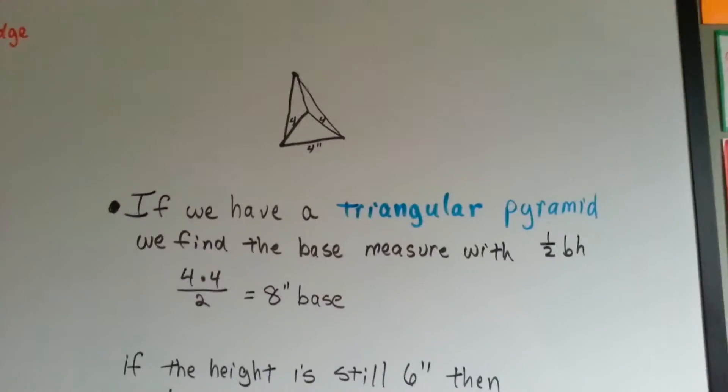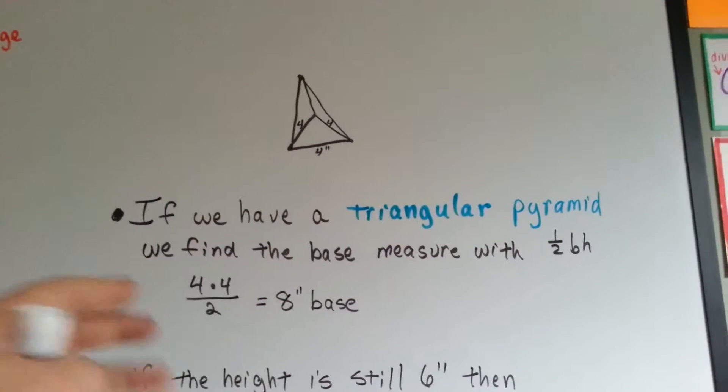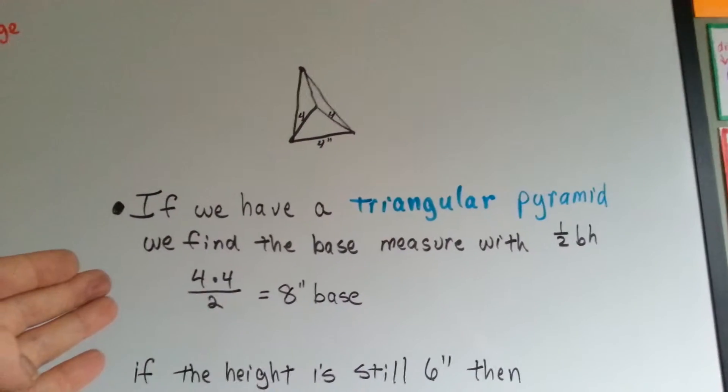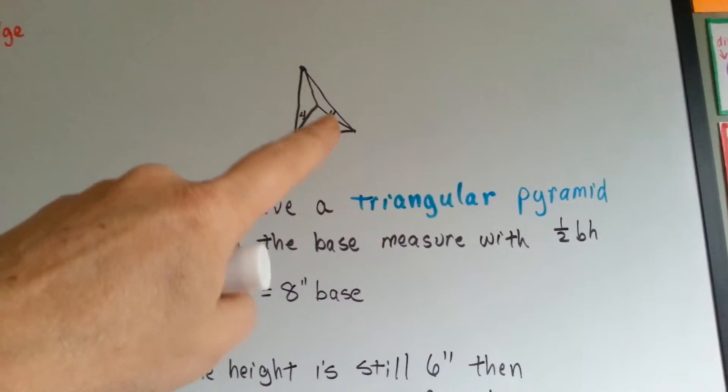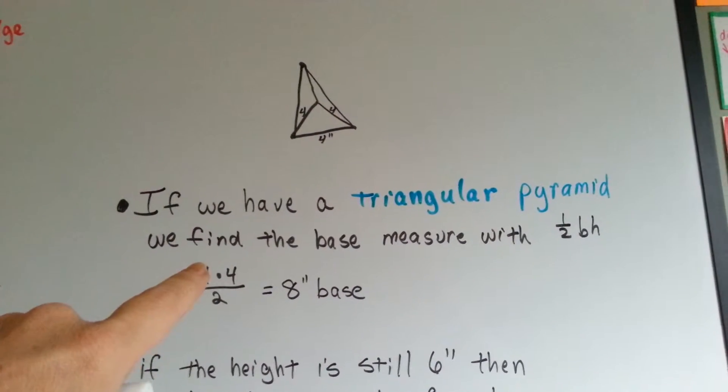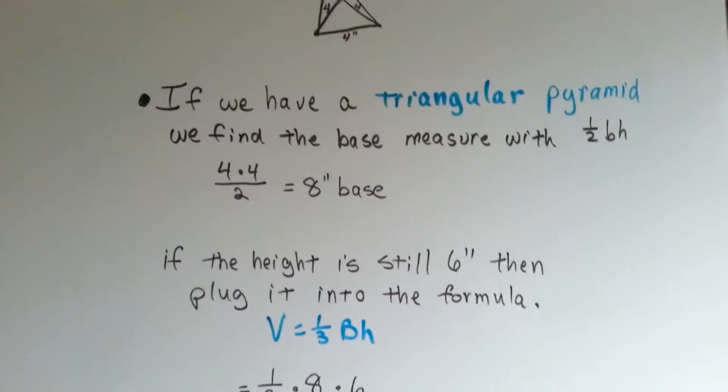What if you have a triangular pyramid? We find the base measure with half base height. When you want to find the area of a triangle, you do half base height. If we know that each side is 4, we do 4 times 4 is 16. You divide that in half, and you get an 8 inch base.